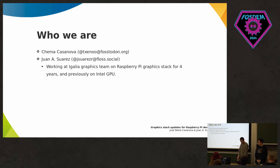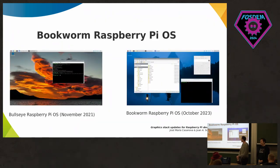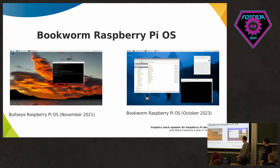This talk basically covers the changes that happened in the graphics stack since the release of Raspberry Pi OS Bullseye Edition in November 2021, up to the latest version, Bookworm, which was released several months ago in October 2023.